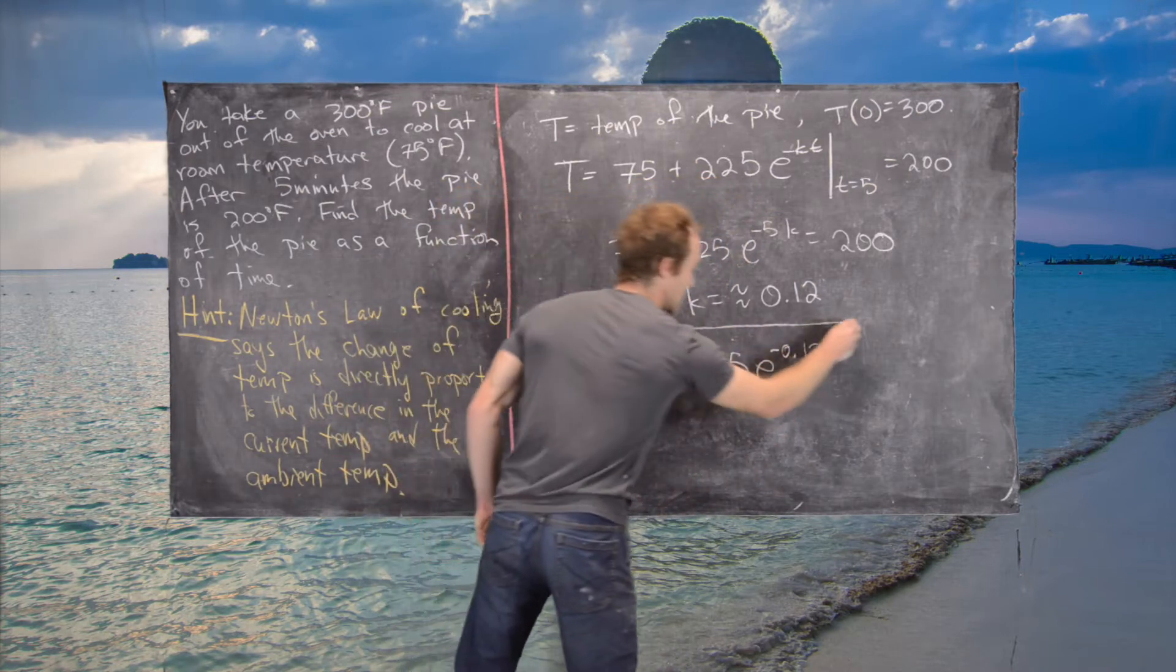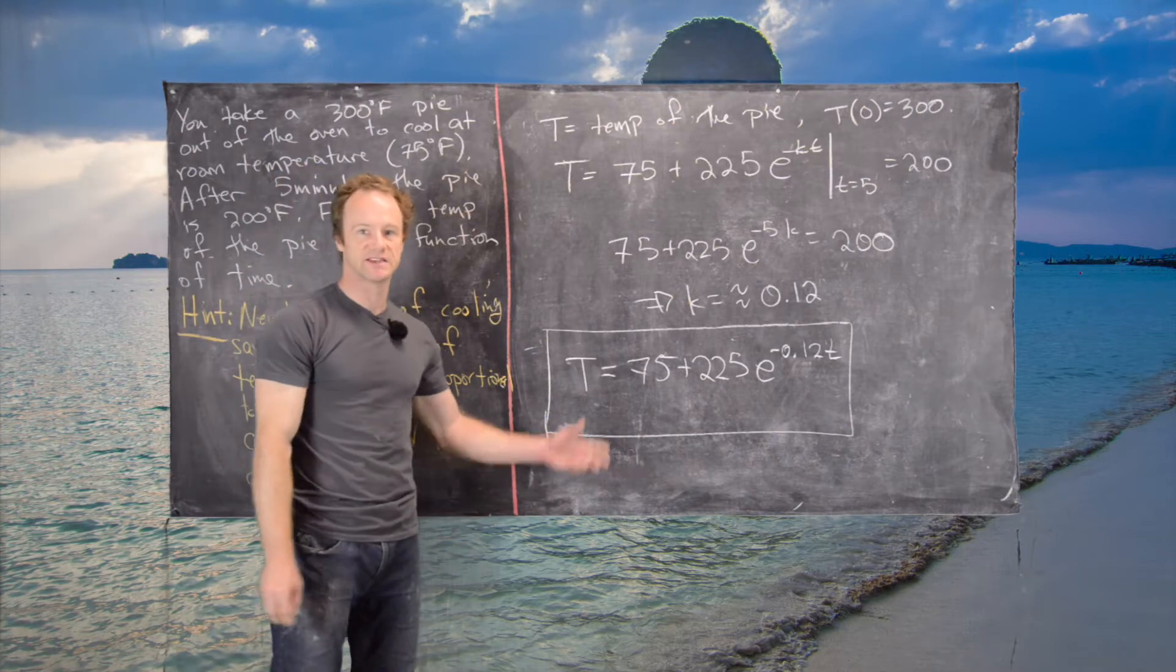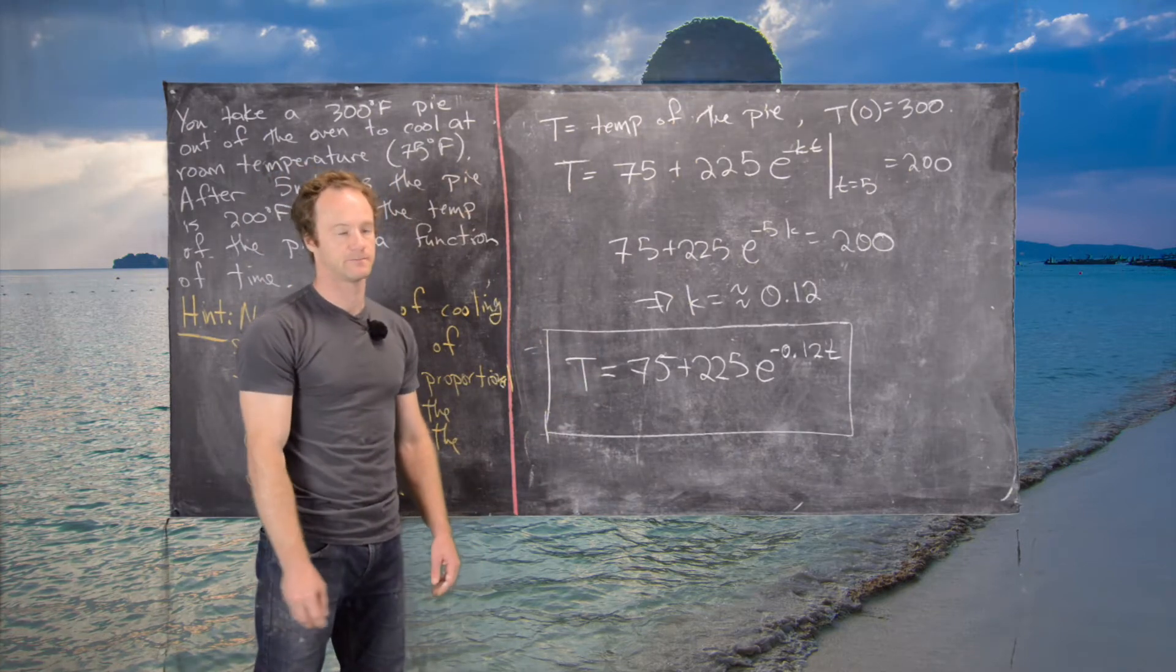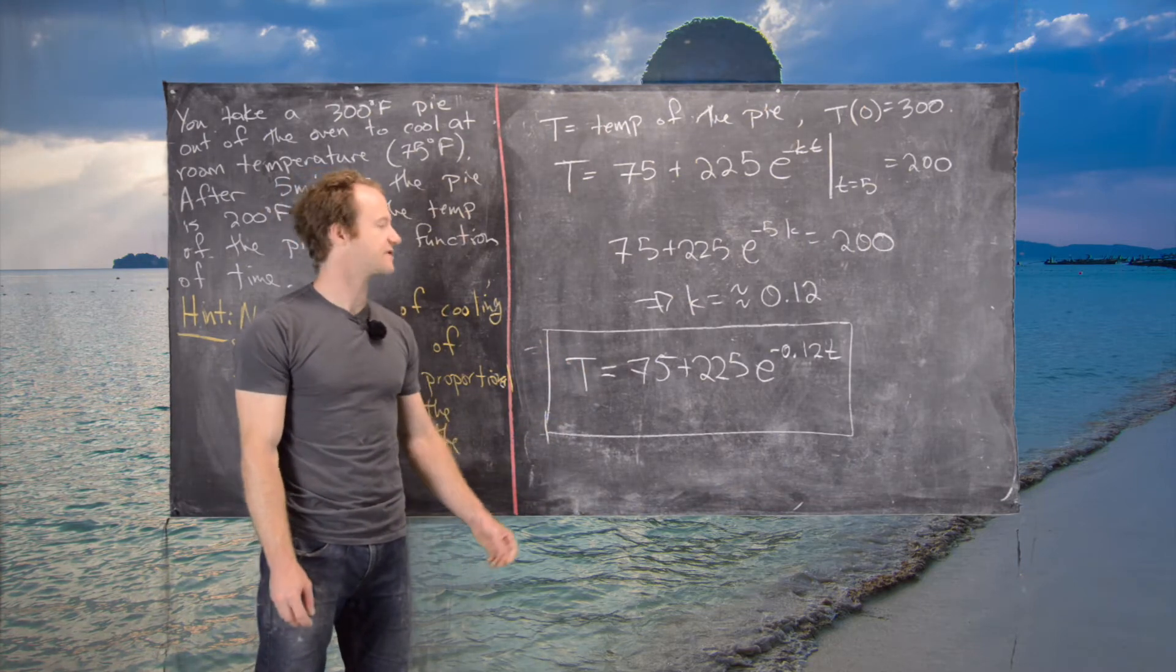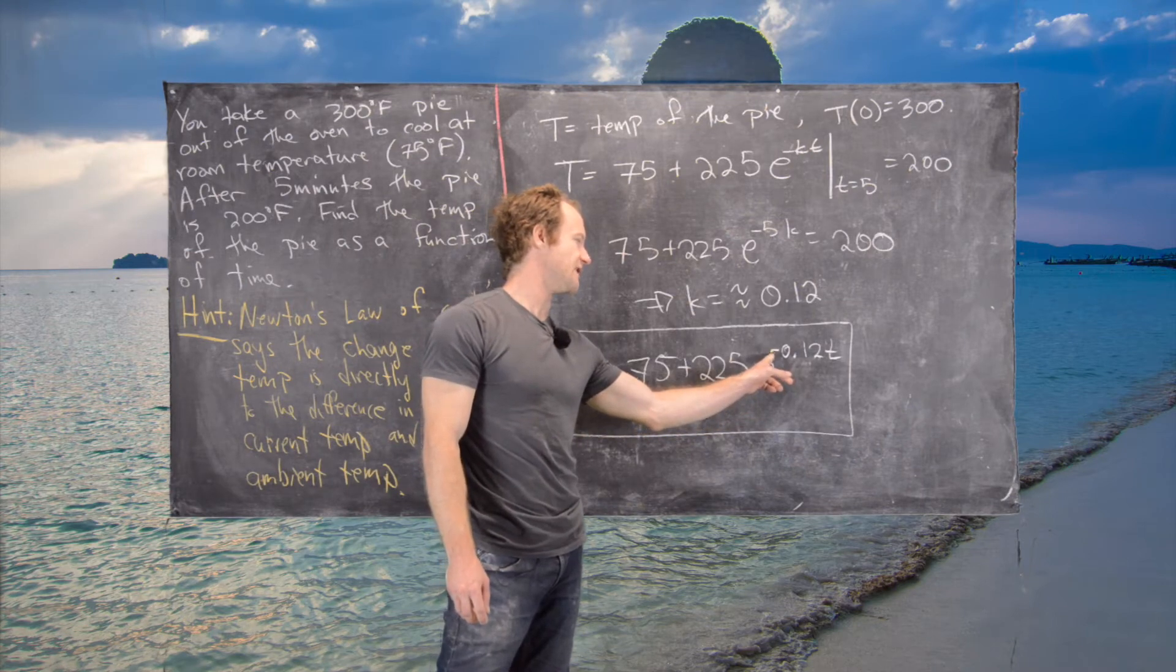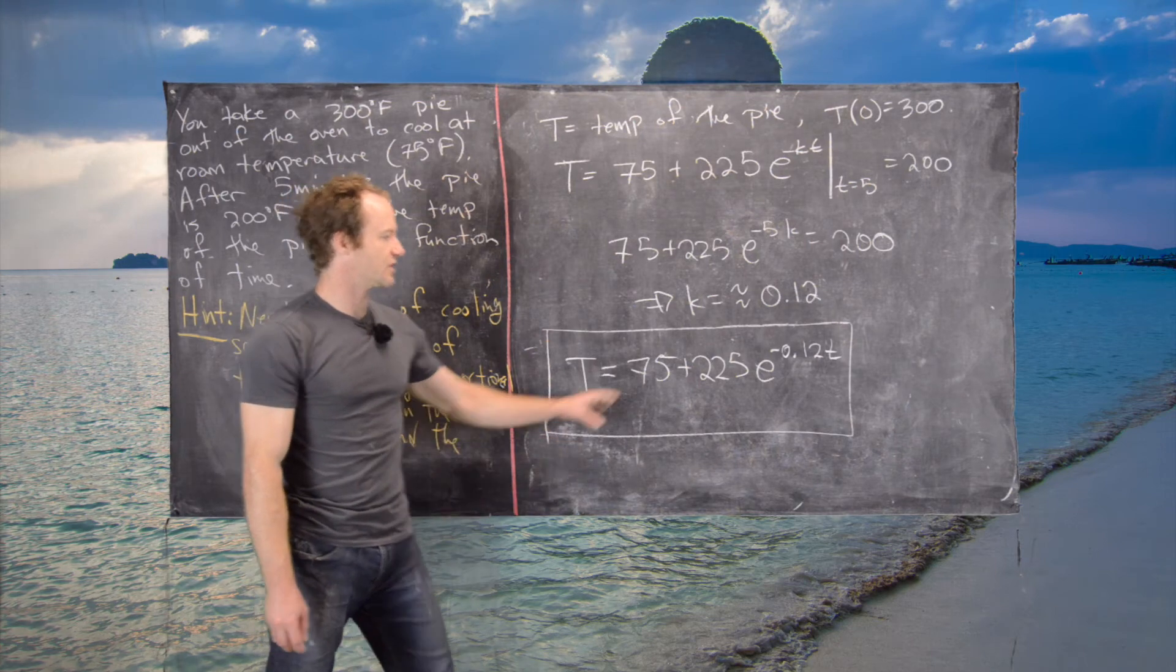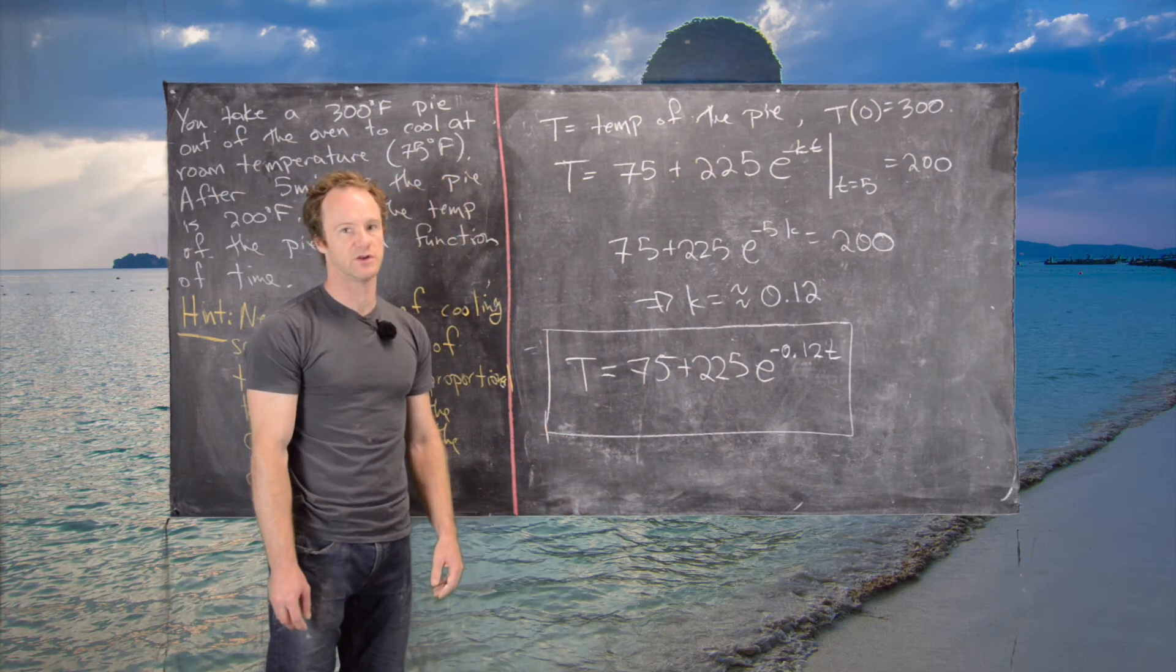As a quick check, notice as t approaches infinity—like letting the pie sit out overnight—this term goes to 0 because we have e^(-0.12t). This tells you the temperature approaches 75, which is what you'd expect.